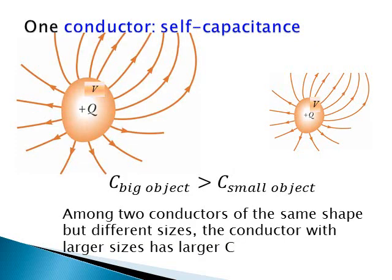This means that, in general, bigger objects tend to have larger capacitances compared to smaller objects. The Earth has a much larger capacitance than a small conducting ball. Therefore, we use grounding to draw the charge from the conducting object into the Earth. Among two conductors of the same shape, but different sizes, the conductor with a larger size will have a larger capacitance.